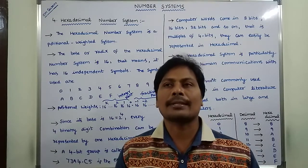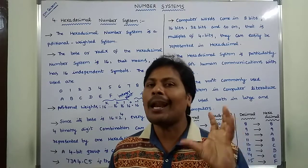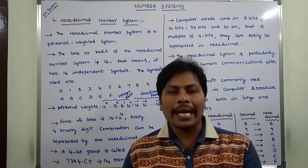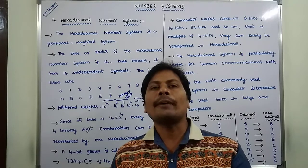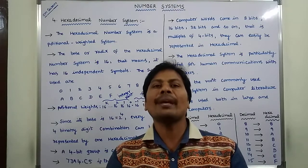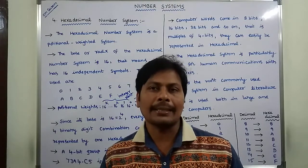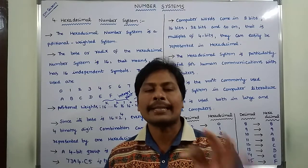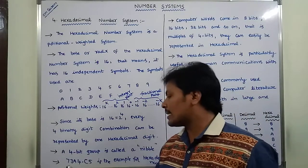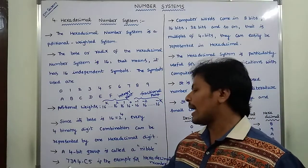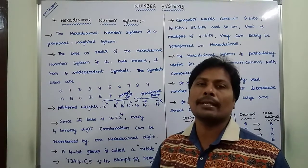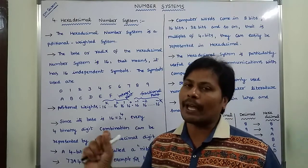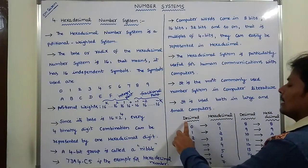Hexadecimal number system can be treated as a positional weighted system. Positional weighted system means each and every digit in a hexadecimal number has a particular weight based on its position. In a hexadecimal number, the digits used are 0 to 9, and for values 10 to 15, capital A to capital F are used.